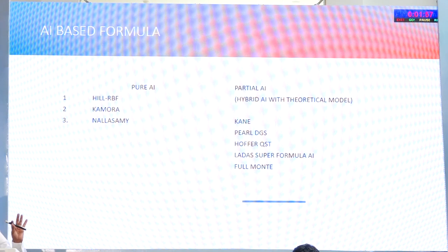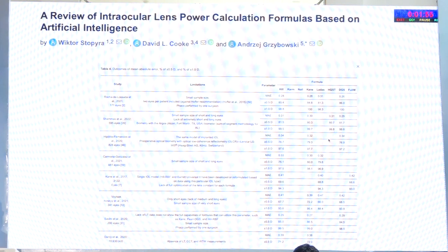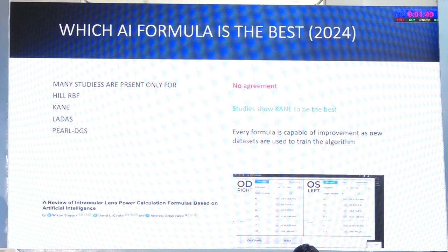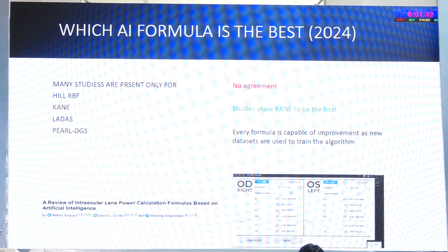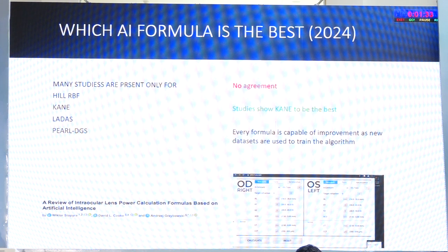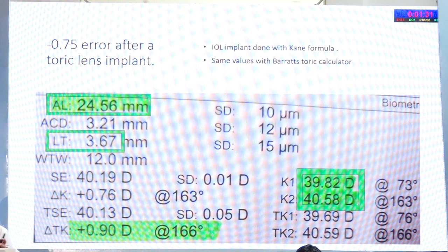Which of these various modern formulae is the best? A 2024 review by Savini et al looking at all publications on AI-based formulae concluded that every surgeon who developed a formula thinks his is the best, but if you look at those with large numbers of studies, Kane is the best. If you want to use any one formula, please use Kane — and all these formulae are not static; they are living formulae that will improve over time.